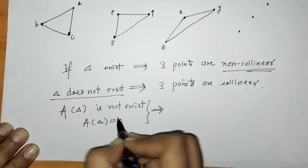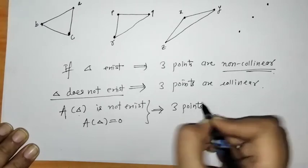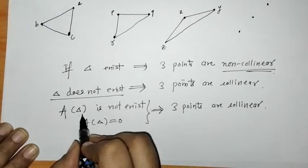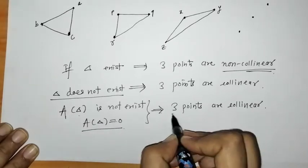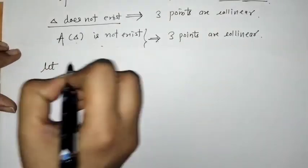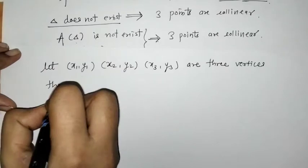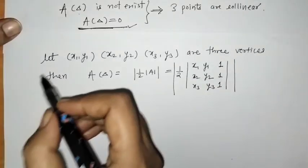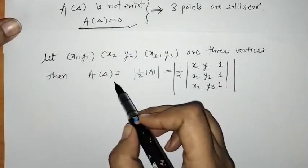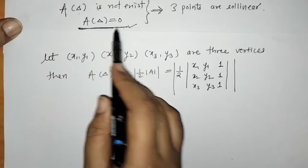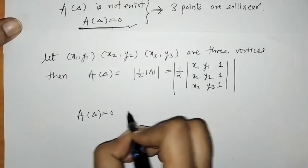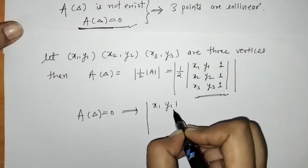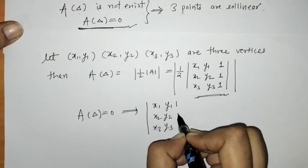The area of the triangle is zero. This implies that these three points are collinear — if we can't form a triangle between three points, the area is zero and the points are collinear. We know the area of a triangle given three vertices. If the area is zero, then the determinant with entries x1, y1; x2, y2; x3, y3 and a third column of ones is zero.